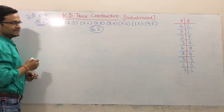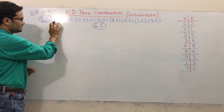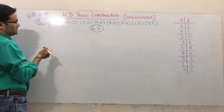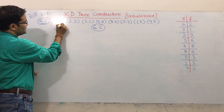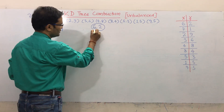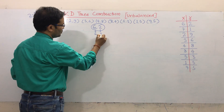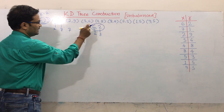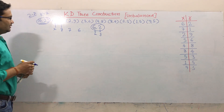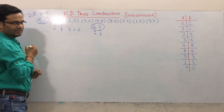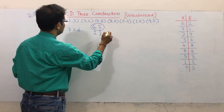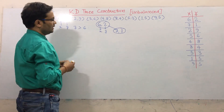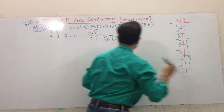Now take the point 7, 1. Each new number you have to compare with the root node — compare the x values. So here we have x=7 and the root has x=6. So obviously 7 is greater, then this value will go to the right side, because there is no data there.